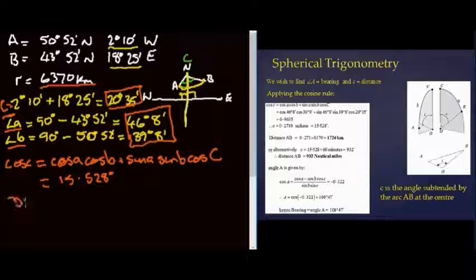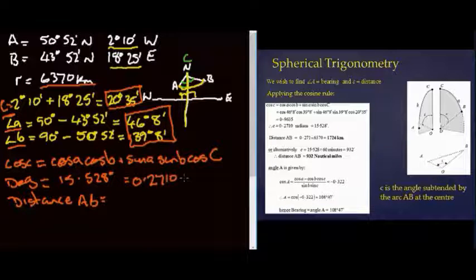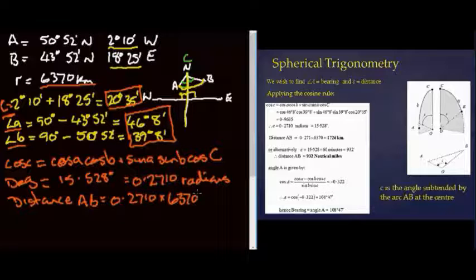And the distance therefore, distance between a and b equals that answer in degrees, which equals 0.2710 in radians. So the distance then is that answer in radians, 0.2710 times the radius of the Earth, which we discovered was 6370 kilometres. So the distance is 1726 kilometres.